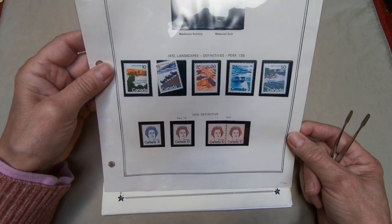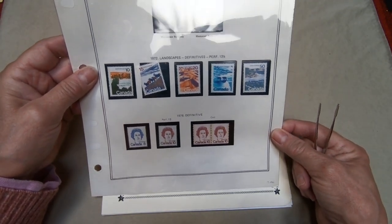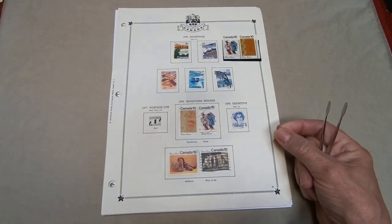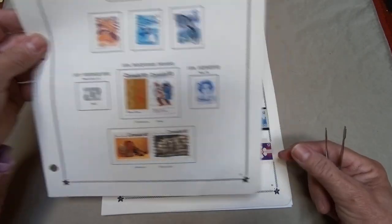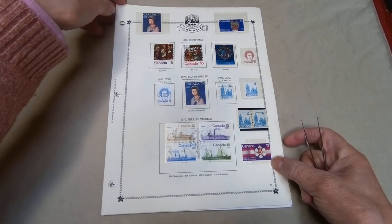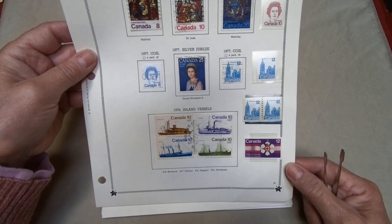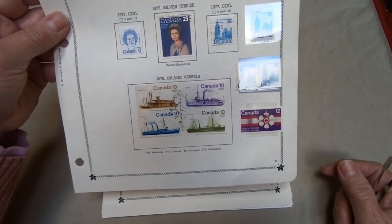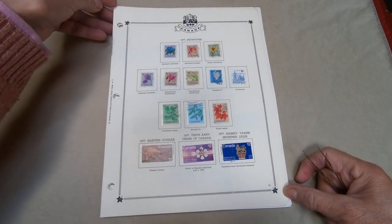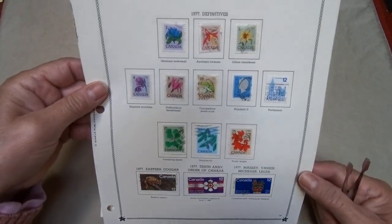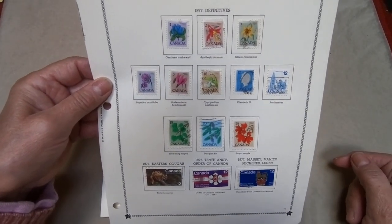The landscapes series is a fairly plain but rather nice and complete issue — these are the 1976 issues. A silver jubilee stamp for the Queen is shown alongside inland vessels. Flora and fauna — including a doe and fawn — are a big part of Canadian stamp issues.